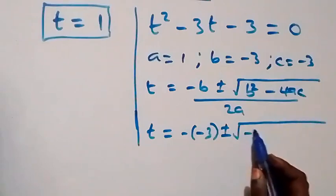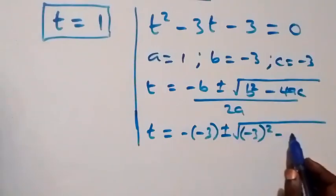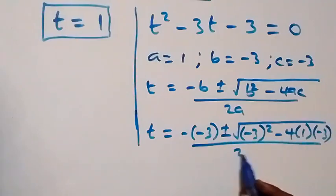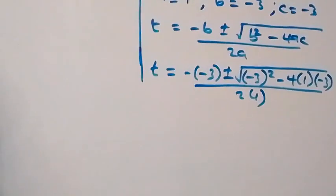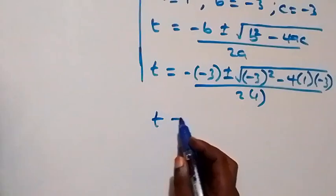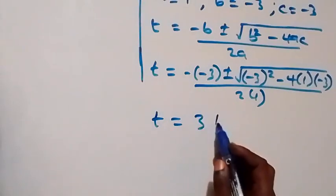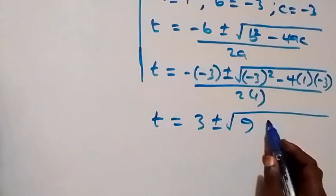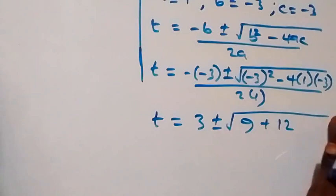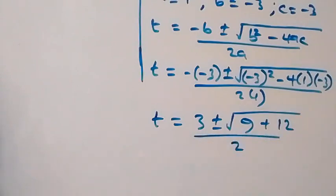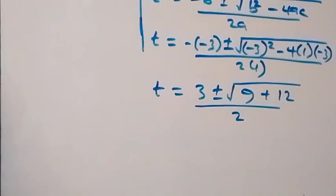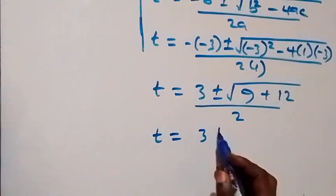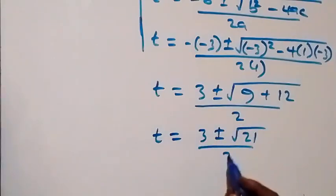Substituting the values: t equals minus(minus 3) plus or minus square root of (minus 3) squared minus 4 times 1 times (minus 3), over 2 times 1. Simplifying, t equals 3 plus or minus square root of 9 plus 12, over 2, which gives t equals 3 plus or minus root 21, over 2.